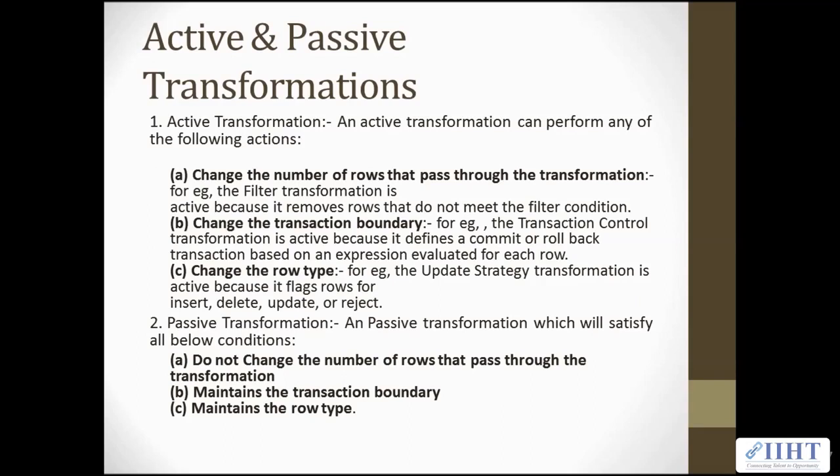An active transformation can perform any of the following actions: change the number of rows that pass through the transformation. For example, the Filter transformation is active because it removes rows that do not meet the filter condition. Then change the transaction boundary.